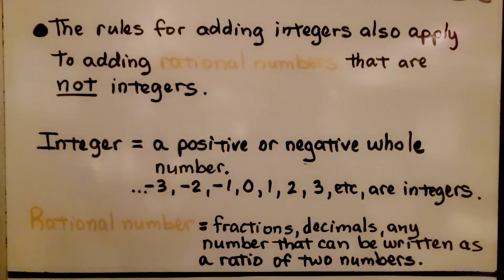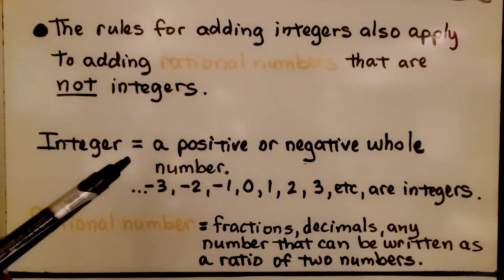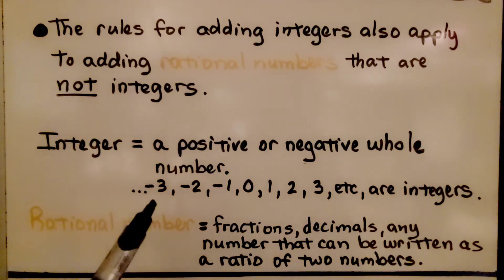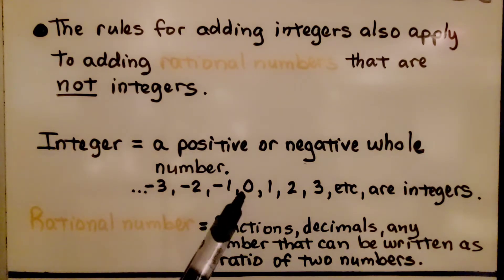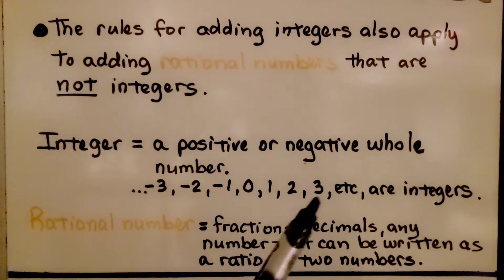If you remember, an integer is a positive or negative whole number — so that would be negative 3, negative 2, negative 1, 0, 1, 2, 3, etc. These are all integers.